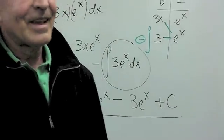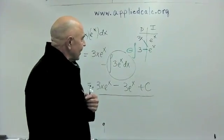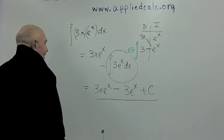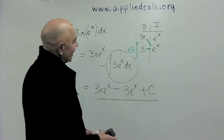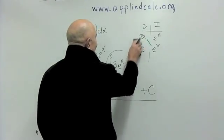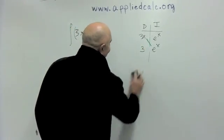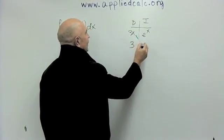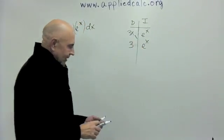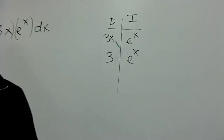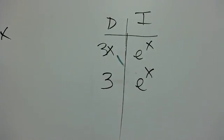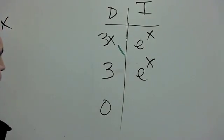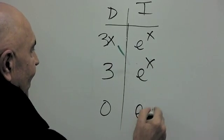If you're feeling lazy, you might make it even easier. Let's get really lazy and say I don't want to do that product either. Start again and do one step once more — take the derivative of 3x and the integral of e to the x. But I don't want to do that product, so do it again. Take the derivative once more and you get zero. Take the integral of e to the x once again and you get e to the x.